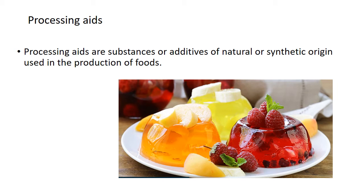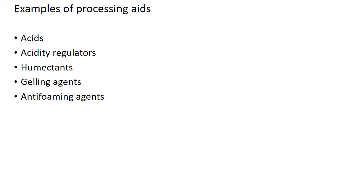Now we move on to processing aids. Processing aids are substances or additives of natural or synthetic origin which are used in the production of foods. They are commonly used in a wide variety of products including bakery, confectionery, jams, jellies, meat, etc.